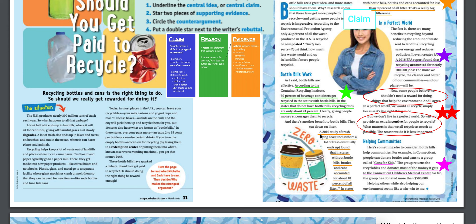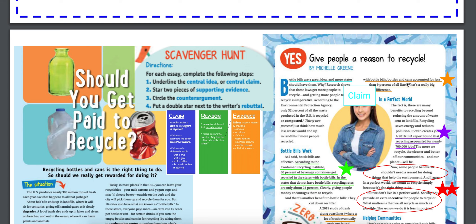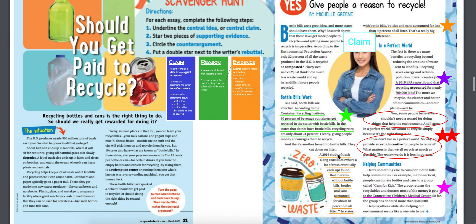Continuing reading: a 2019 study of trash along coastlines found that in states without bottle bills, bottles and cans accounted for about 18% of all litter, while in states with bottle bills, bottles and cans accounted for less than 9% of all litter. That's a really big difference. She has statistics from a 2019 study — solid evidence to support her claim that bottle bills are a great idea and more states should have them.